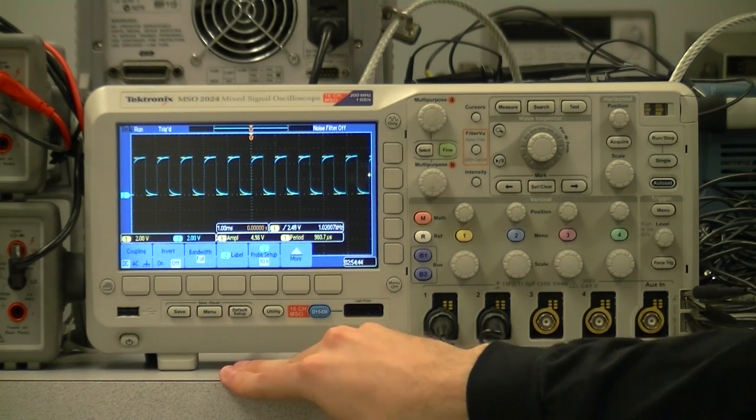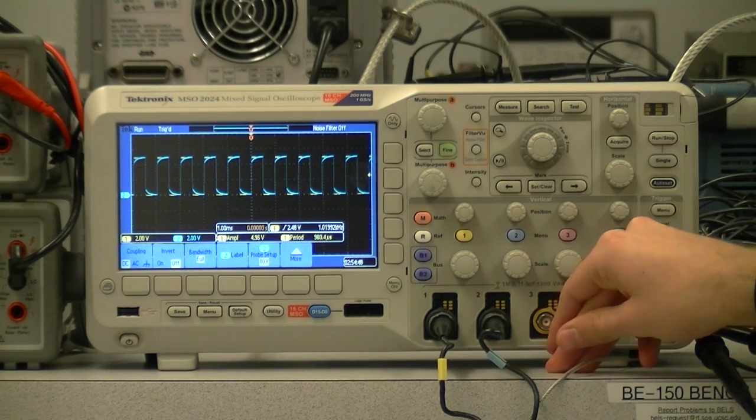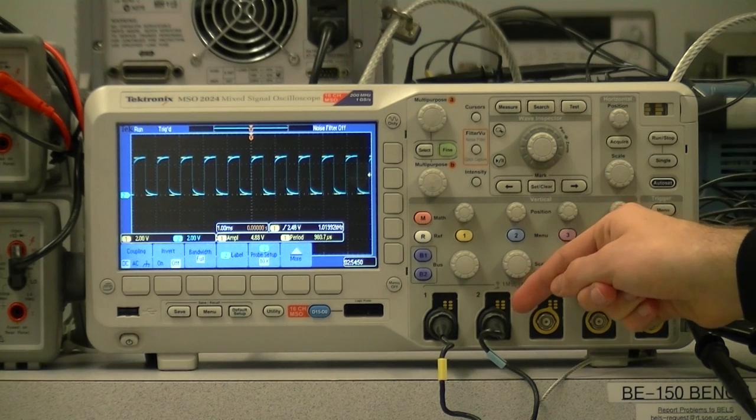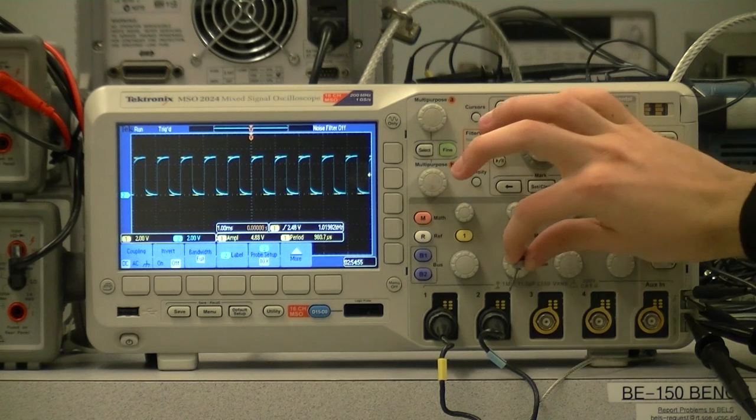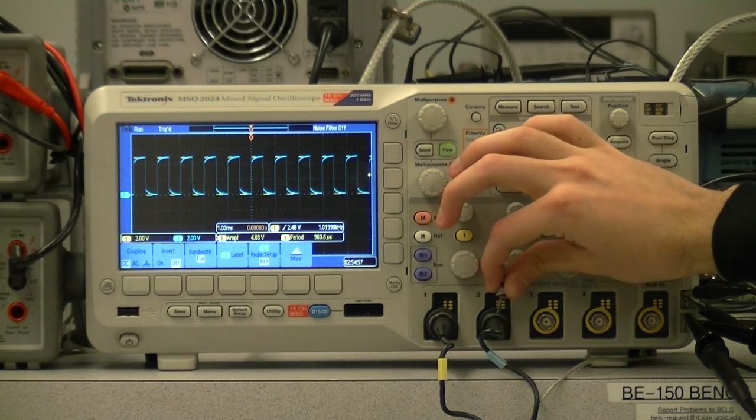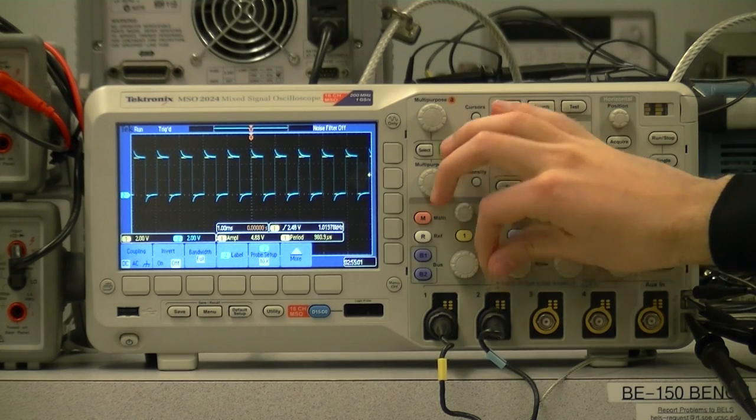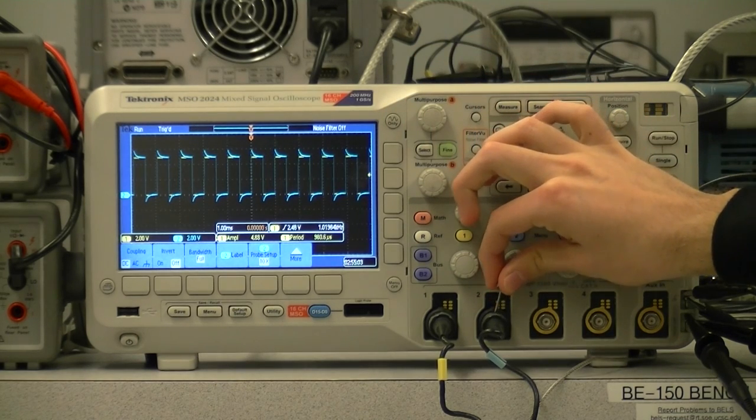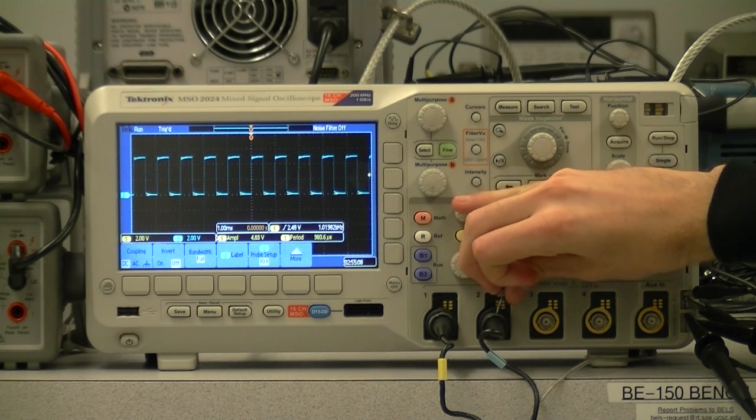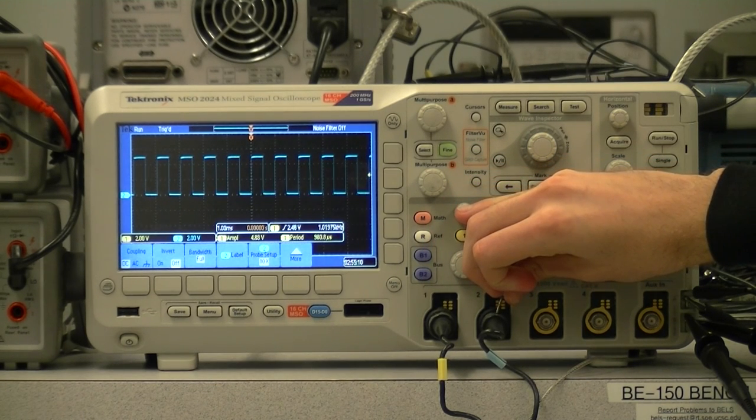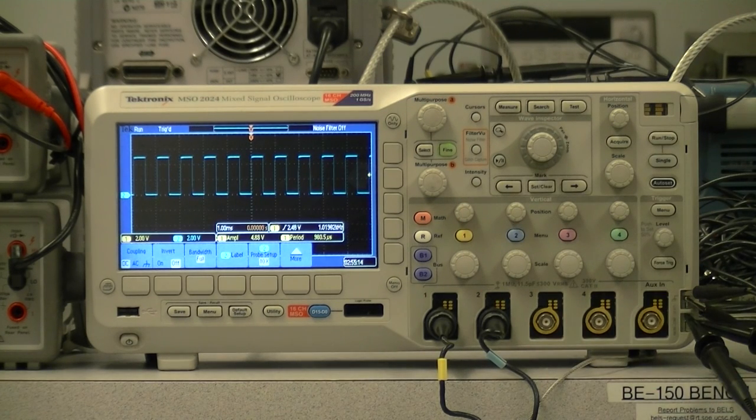To adjust it, there is a variable capacitor at the base of the probe table here, which we can adjust using a very small screwdriver. If we turn it one direction, it causes an overshoot, and in the other direction, it causes these rounded corners. We have to get it just right to get a clean square wave. Now the blue probe is also properly compensated.